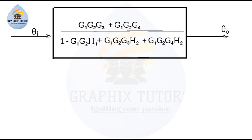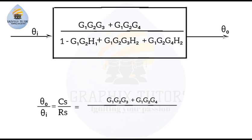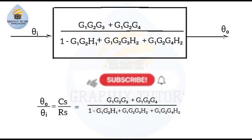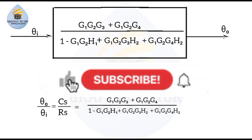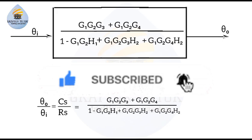So the overall transfer function cs over rx equals g1g2g3 plus g1g2g4, all over one minus g1g2·h1 plus g1g2g3·h2 plus g1g2g4·h2. That would be our final answer. If you have found this video helpful, please don't forget to like, subscribe, and also share the video. Thanks for watching.